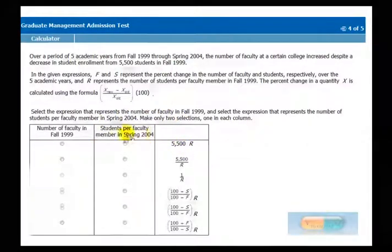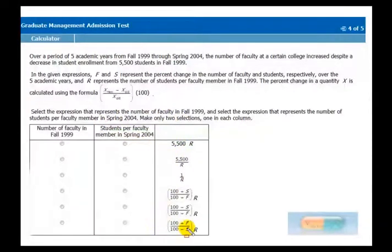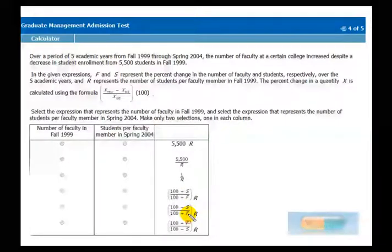So now, where on this question would you mark your answer? Well, you look at it, it's 100, you have to make sure that S is on top, faculty is on bottom, so it's not this one.